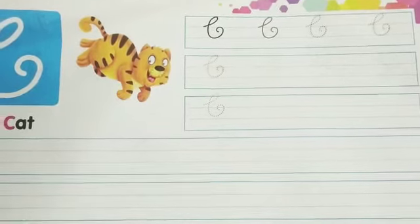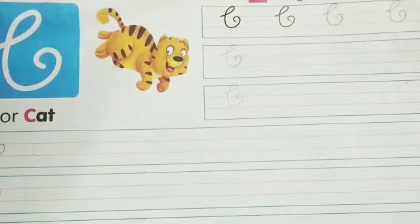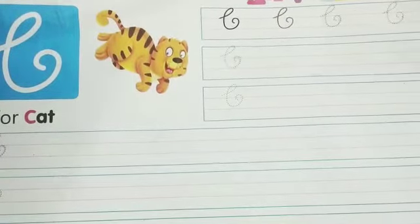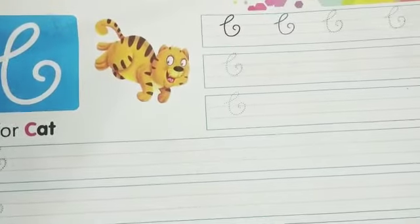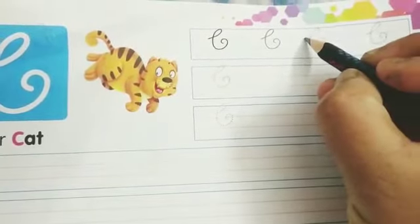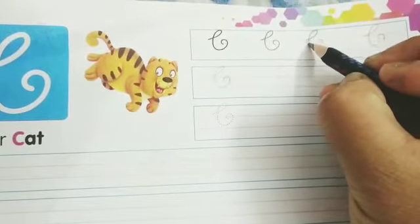You can see C for cat here and this is the pattern which you have to follow. You can see dotted C.